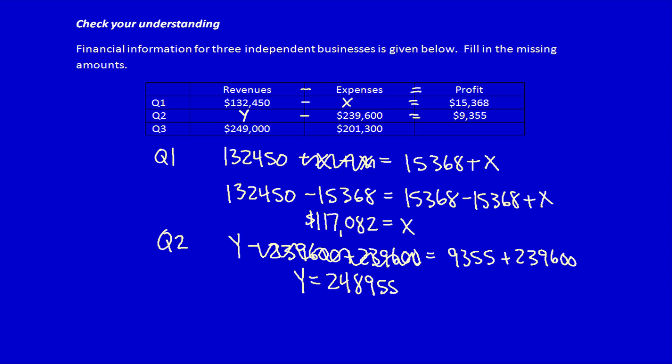Finally, let's solve for z. This one's the easiest. $249,000 minus $201,300 is equal to $47,700.